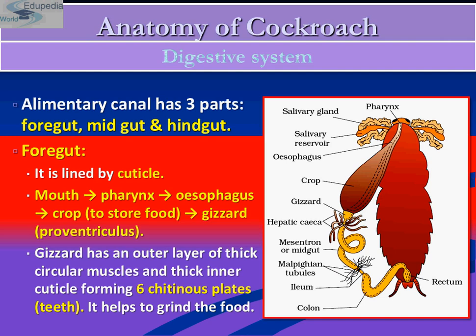Cuticle is a protective layer. The digestion process proceeds as food goes into the mouth, then into the pharynx, then the esophagus, then the crop, then the gizzard, and finally out through the anus. The gizzard has an outer layer of thick circular muscles and a thick inner cuticle that forms six chitinous plates, which we call teeth. It helps to grind the food.